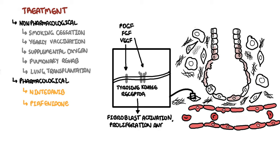Idiopathic pulmonary fibrosis is progressive, with a median survival of 3 to 5 years after diagnosis. The progression is variable and may be associated with periods of stability with intermittent periods of acute decline. Up to 20% have acute exacerbations characterized by worsening hypoxic respiratory failure. Exacerbations are often idiopathic but can be triggered by infection, aspiration, or drug toxicity. There is also an increased risk of venous thromboembolism, lung cancer, and pulmonary hypertension.